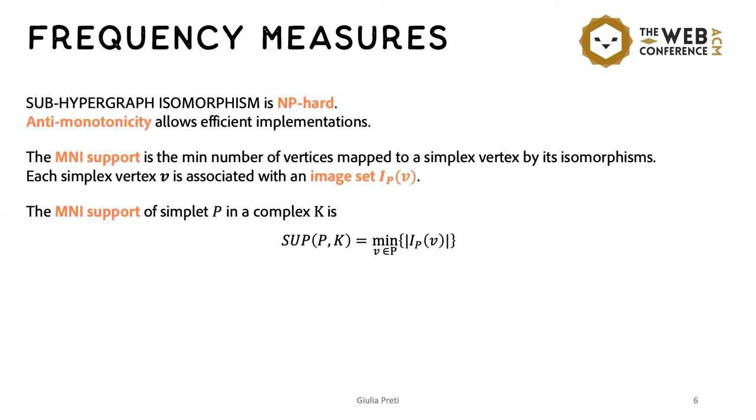Similar to the graph case, finding these occurrences is an NP-hard task because these mappings are found by solving isomorphism problems, in this case, a sub-hypergraph isomorphism problem. And so, for this reason, using anti-monotonic frequency measures is beneficial because they allow a considerable pruning of the search space.